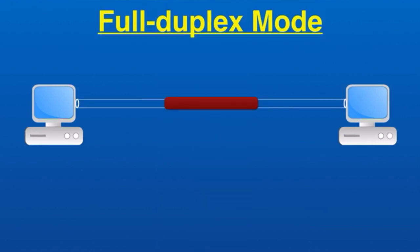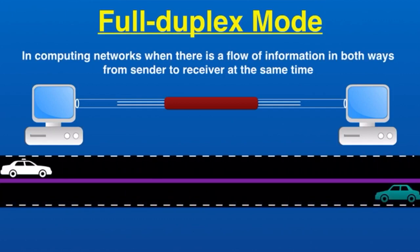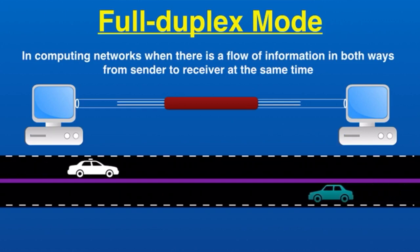In full duplex mode, there is a flow of information in both directions simultaneously — from sender to receiver and receiver to sender at the same time. Data can be sent in both directions simultaneously. Full duplex has two simplex channels: one channel carries traffic in one direction and the other carries traffic in the opposite direction — essentially two lines, one for sending and one for receiving. Full duplex is like a two-way road where traffic can go both ways at the same time. It is used when communication in both directions is required at all times, and it has double the bandwidth compared to half duplex.